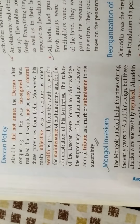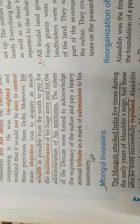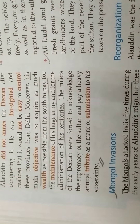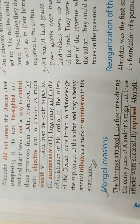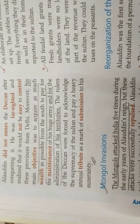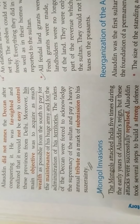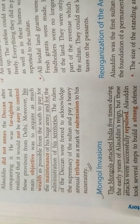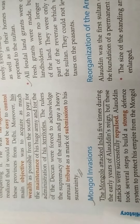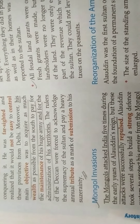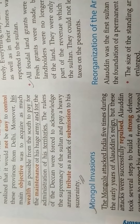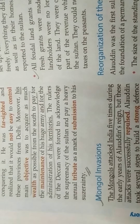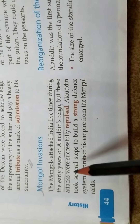Whatever areas he captured in the South, they were forced to give a huge amount of taxes to Alauddin Khilji. By using those taxes and the wealth he captured from the South, he ran his administration and also paid salary to his huge army. Next is Mongol invasion.